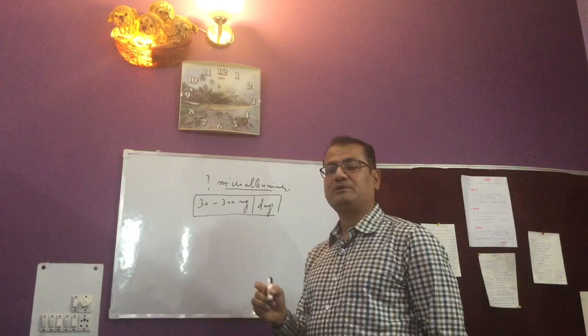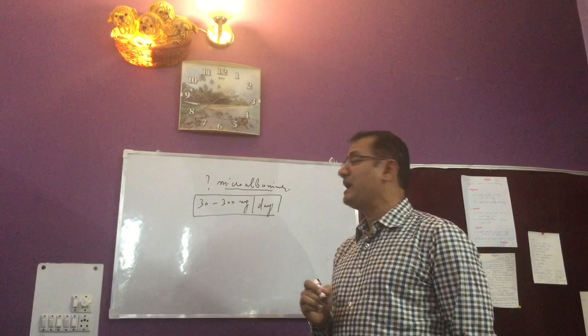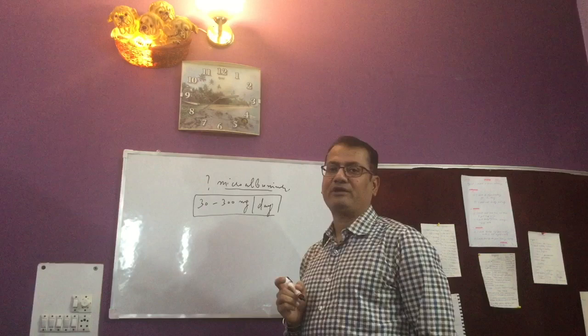And next day, once the patient comes up with the complete 24-hour urine sample, we'll be estimating the albumin amounts. And if it is going to be in this range, 30 to 300 milligrams, then we say that, yes, microalbuminuria is there.